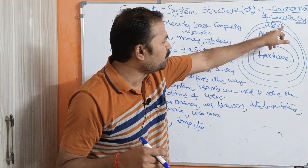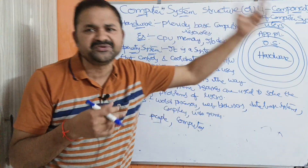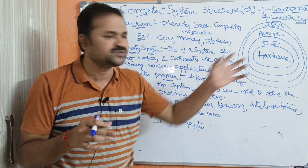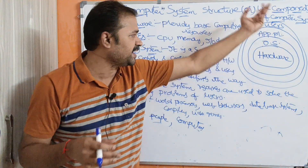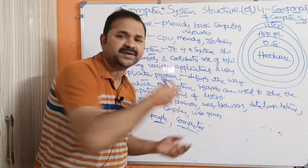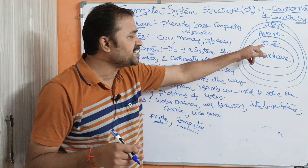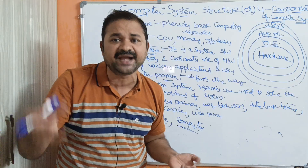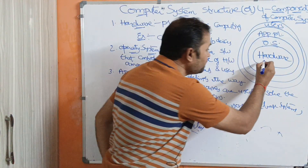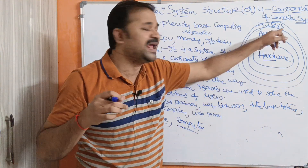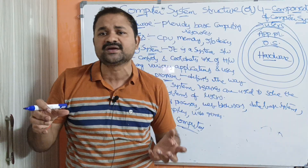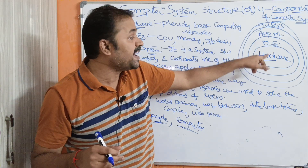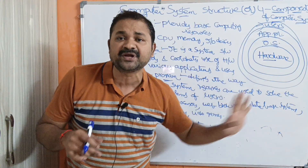Now we have one more layer: users. Users are people or some computers or machines. In order to solve the problems of users we use all these layers — hardware, operating system, and application program. Now let us see about what is an operating system. We know that an operating system is an interface between the user and the computer hardware.